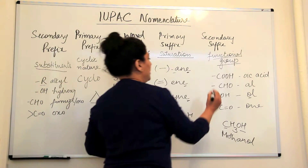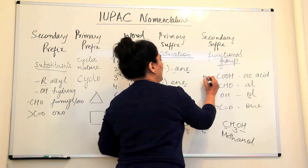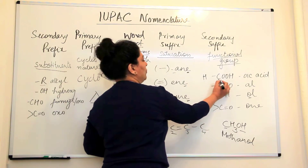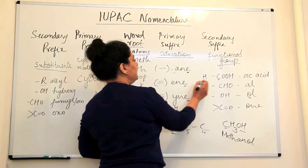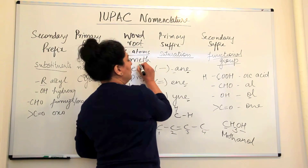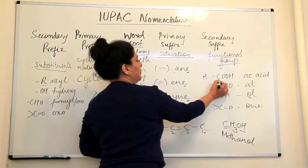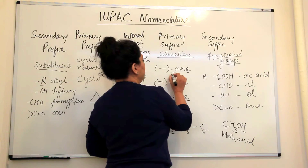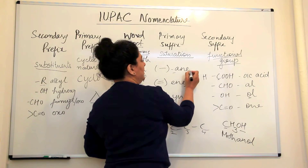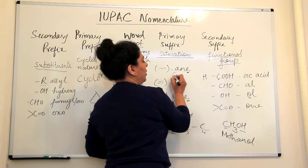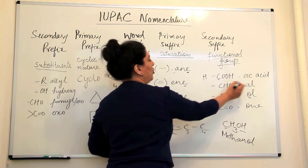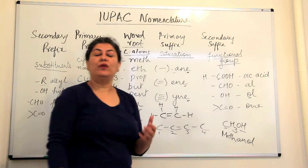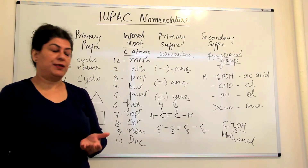If you have HCOOH, there is only one carbon atom. The compound would be 'meth' + 'an-' — the 'e' is dropped — and with '-oic acid,' giving us methanoic acid.